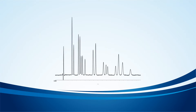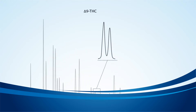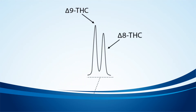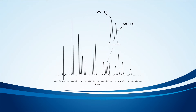For cannabis potency, everyone is looking for THC, but you've probably noticed that your analysis is actually looking for two different THCs: Delta 9 and Delta 8. The two compounds have different properties for the end customer, so they're important to separate — but ever wonder what else makes them different?